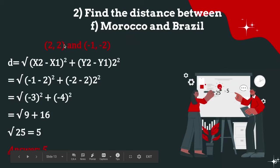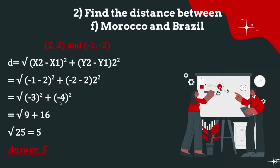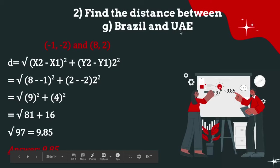Find the distance between Morocco (2, 2) and Brazil (-1, -2). Using the distance formula, replacing the numbers: √((-1 - 2)² + (-2 - 2)²) = √((-3)² + (-4)²) = √(9 + 16) = √25 = 5.